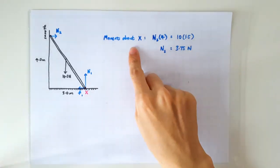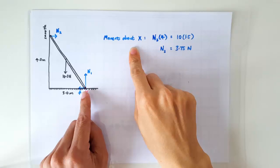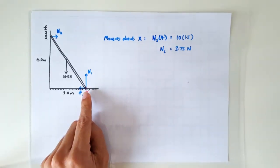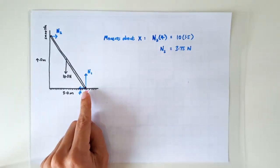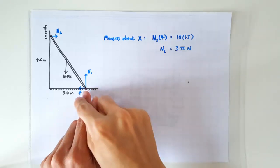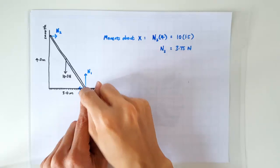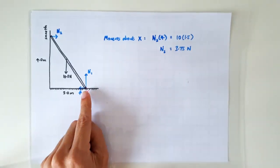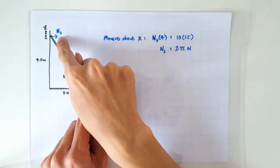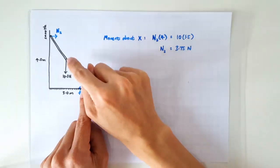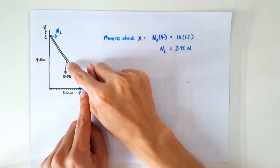The first thing we are going to do is to take moments about point X, which is this point here. So when we consider moments about this point, N1 and F1 will not come into the picture because they act right at that point, so they have no turning effect. So all we have is the clockwise moment exerted by N2, which must be balanced by the anti-clockwise moment exerted by the weight of the ladder.